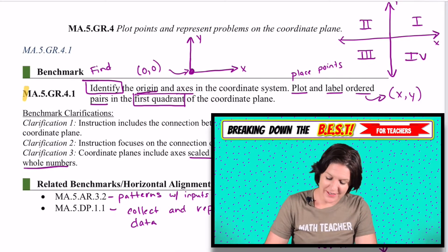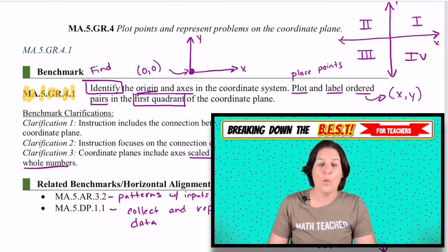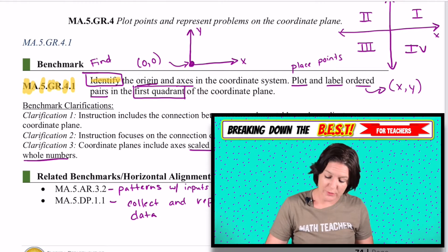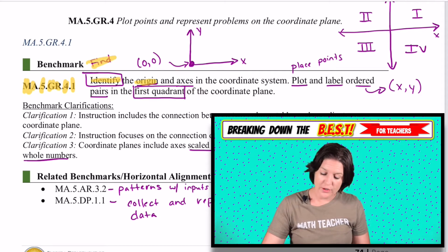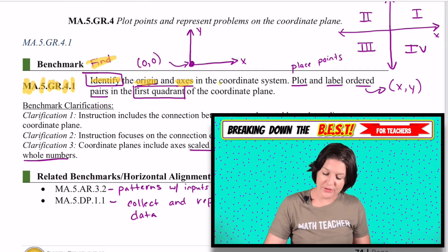Today's standard is MA.5.GR.4.1. This standard says to identify, which in this case means to find the origin and the axes on the coordinate system, in the coordinate system.